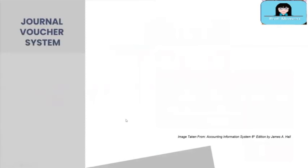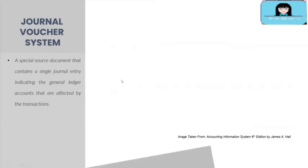Let's continue with journals and discuss the term called the journal voucher system. Most companies replace their general journal with a journal voucher system. The journal voucher system is a special source document that contains a single journal entry indicating the general ledger accounts affected by the transactions. It is used to record summaries of routine transactions from the special journals to create supporting journal entries, and also to record non-routine transactions, adjusting entries, and closing entries used as the basis for recording to the general ledger.